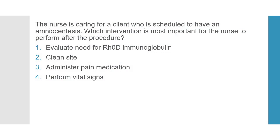The nurse is caring for a client who is scheduled to have an amniocentesis. Which intervention is most important for the nurse to perform after the procedure? Number 1: evaluate the need for RH immunoglobulin. Number 2: clean the site. Number 3: administer pain medications. Number 4: perform vital signs. This is an application question. The question is asking for the most important step after the procedure is done. You always want to identify key words in the stem of the question that will help you find the correct answer.